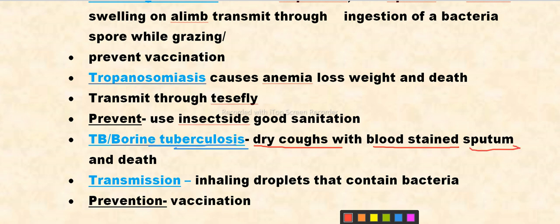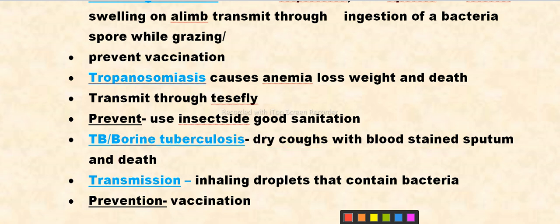Transmission of bovine TB occurs by inhaling droplets that contain bacteria. This is through salivation and droplets from infected animals.